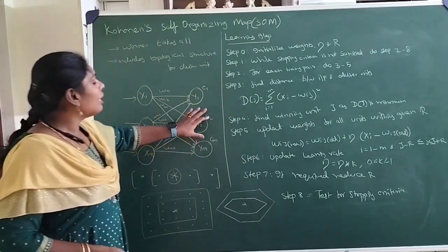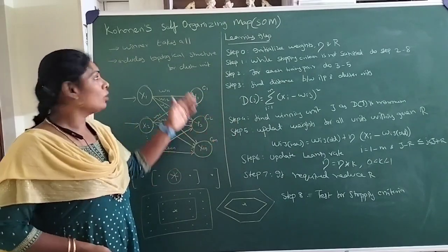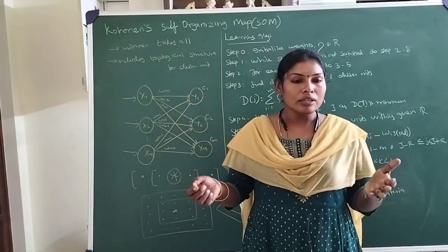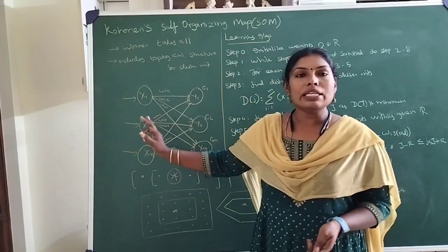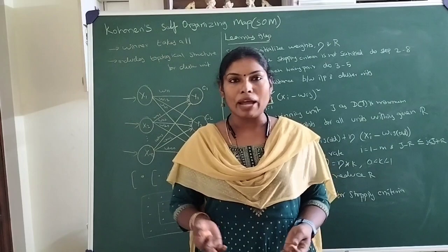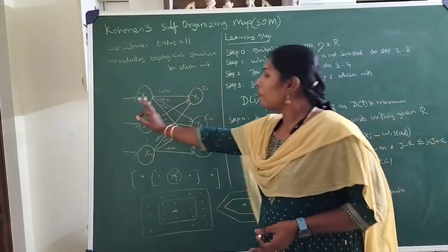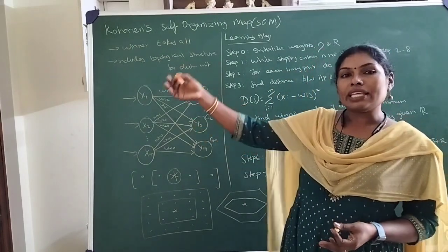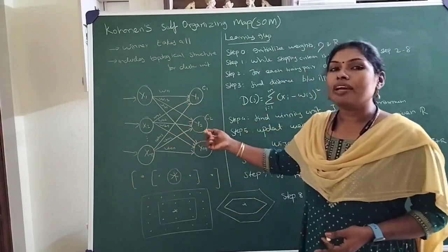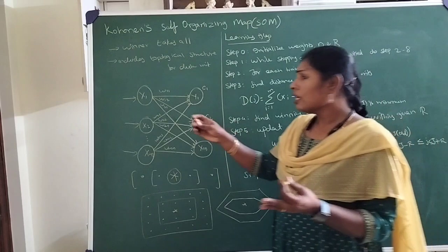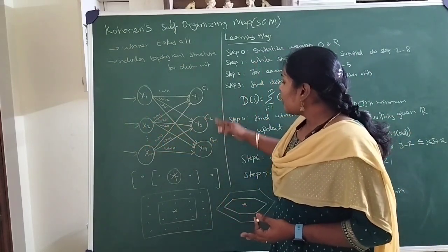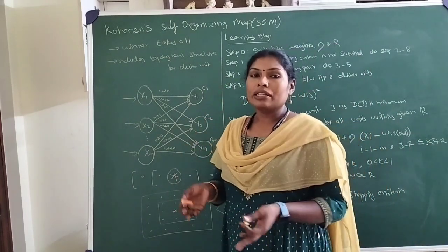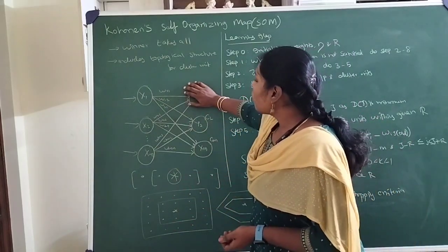What it does is update the weight of all units near to the winning unit — that is the principle called winner takes all. Using any distance matrix formula, such as Euclidean distance or Manhattan distance, we calculate the distance between the input presented and each cluster. One unit is chosen as the best or winner unit based on the minimal distance value. For example, if I present my first pattern and C1 has the minimum value, I choose C1 as the winning unit and update weights only for the links of C1.